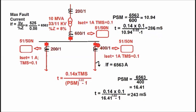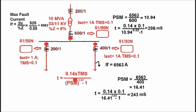Since the LV backup relay trip time (218 ms) is less than the Feeder B relay trip time (243 ms), the LV incomer relay will send a trip signal before the feeder circuit breaker clears the fault. This means that although the fault occurred in Feeder B, the incomer will be tripped due to wrong relay coordination, causing the healthy feeder to also lose power. This demonstrates the impact of improper relay coordination settings in a distribution system — the relay settings must be correct so that the LV overcurrent relay does not trip for faults in any feeder.